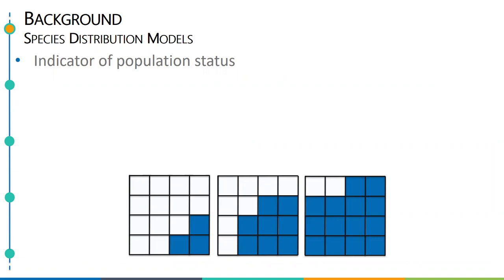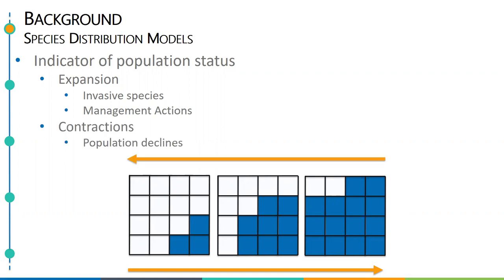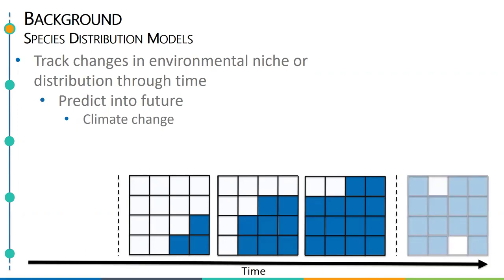Species distribution models provide a powerful method to model species-environmental relationships and provide an indicator of population status. For example, they've been widely used to track range extensions, particularly of invasive species, but also in response to management actions like translocations or habitat management. And likewise, they can also be used to assess range contractions, such as are commonly observed with declining populations. These models can also be used to track shifts in the species distribution or environmental niche through time, and they're particularly useful as the models developed can be used to predict species distributions under future environmental scenarios or look into the past and estimate past distribution based on past environmental conditions.